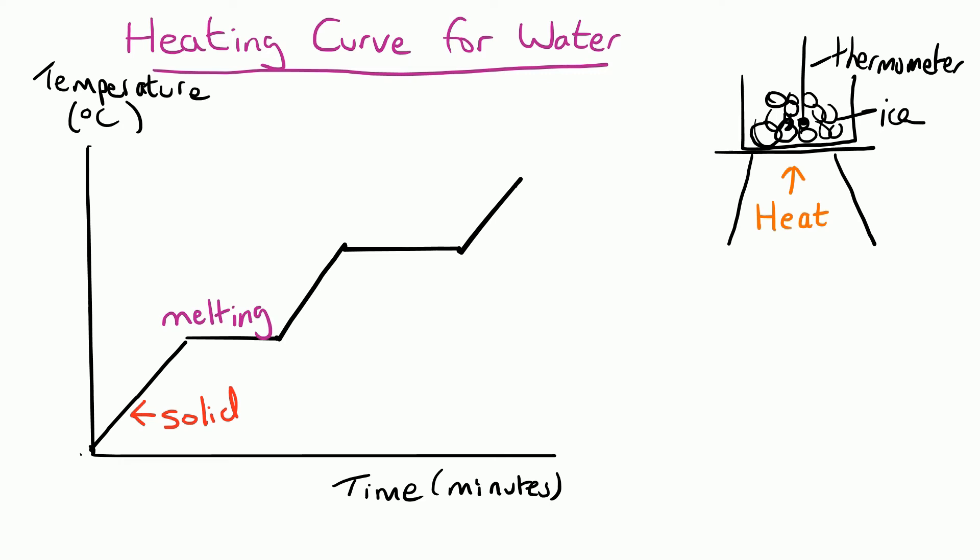Once it's turned into a liquid, the temperature of the liquid starts to rise again as the liquid particles start moving around faster and faster. Then when the next change of state happens and it starts to boil, once again the temperature remains constant as it is boiling. Once it's turned into a gas, the temperature of that gas then starts to increase.